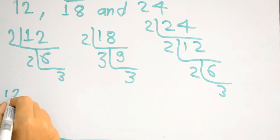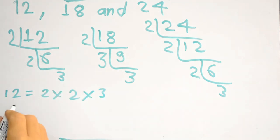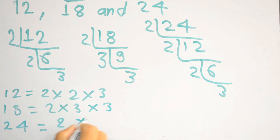Factors of 12 are 2 into 2 into 3. 18 are 2 into 3 into 3. 24 are 2 into 2 into 2 into 3. Now circle the common numbers.